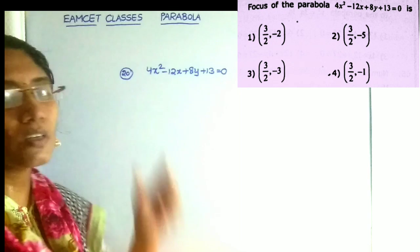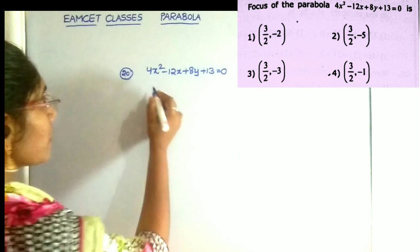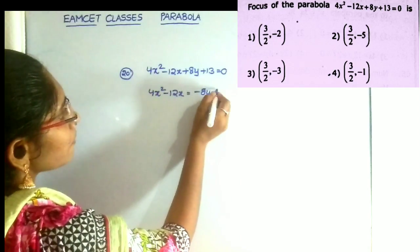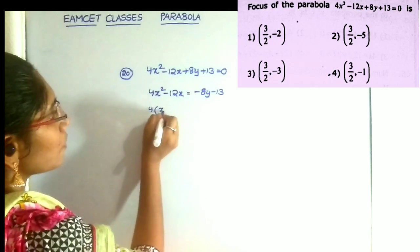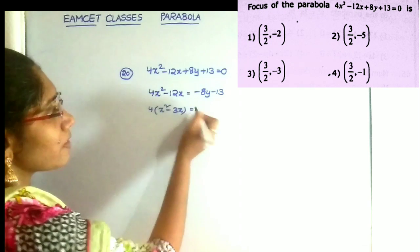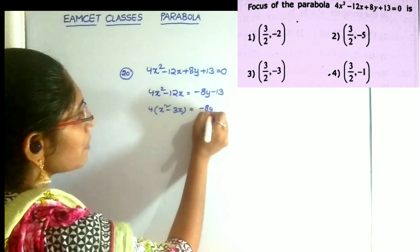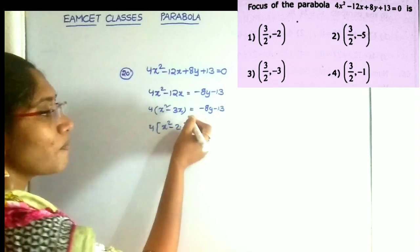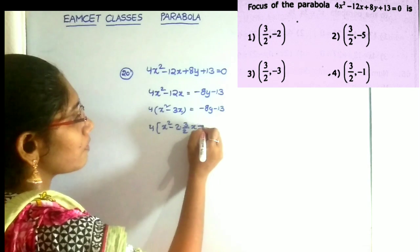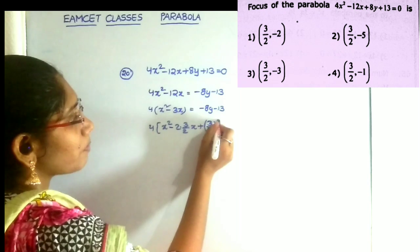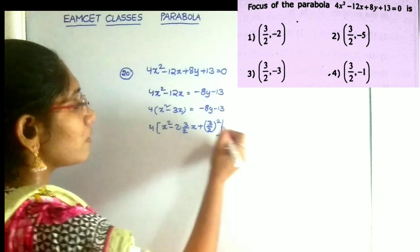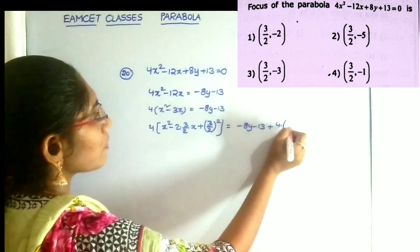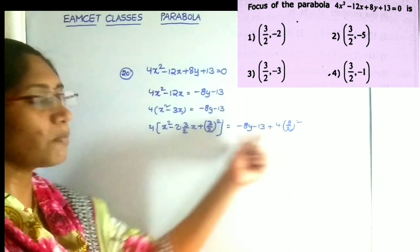The next question: what is the focus of the parabola? First, converting into the known parabola form: 4x squared minus 12x is equal to minus 8y minus 13. Taking 4 as common factor, that is 4 into x squared minus 3x is equal to minus 8y minus 13. Converting the middle value into 2ab form, that is 2 into 3/2 into x, adding the value (3/2)² to both sides.